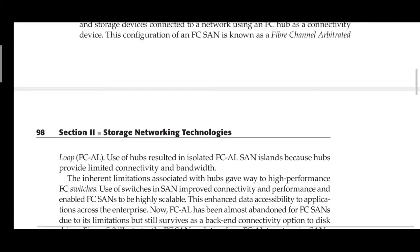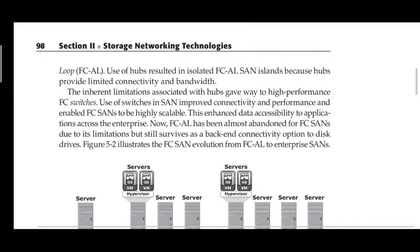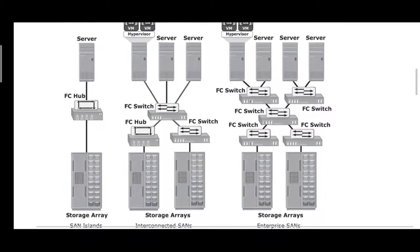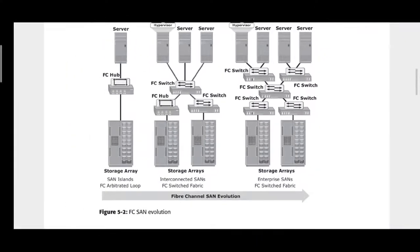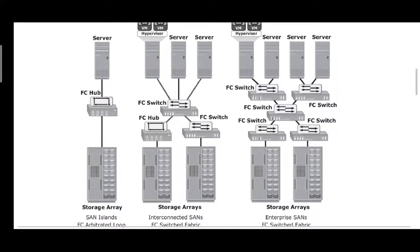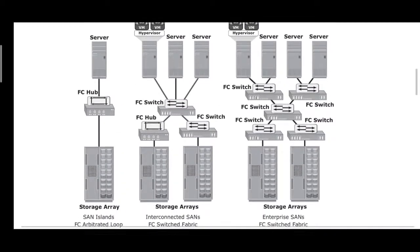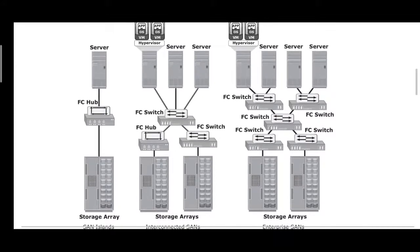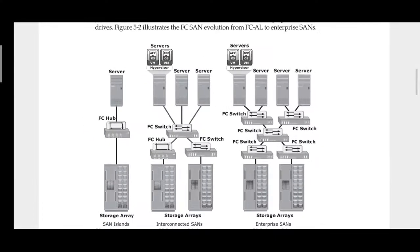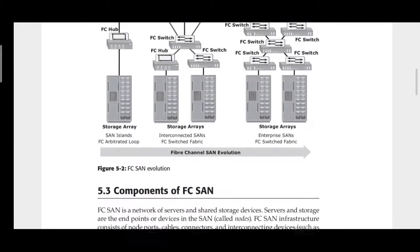We will discuss FC-AL in more detail later. There is also FC-SW, which uses switches instead of hubs. The diagram shows the Fiber Channel SAN evolution: initially an FC hub was used for server-to-storage-array interconnection, then multiple devices with FC switches were added, followed by multi-layer FC switch configurations. These are the various configurations in FC SAN evolution technology.